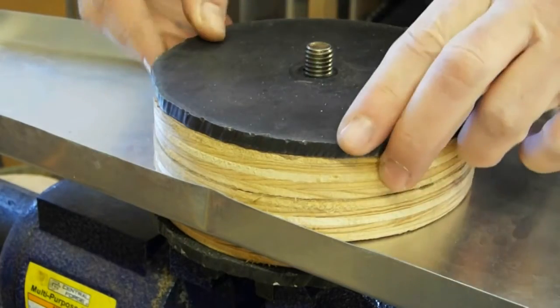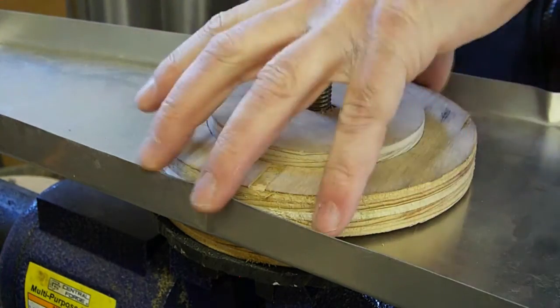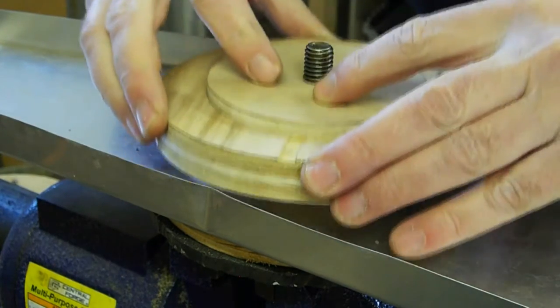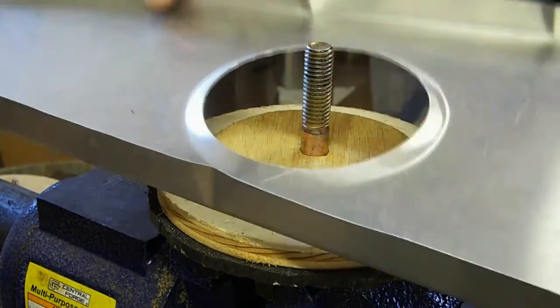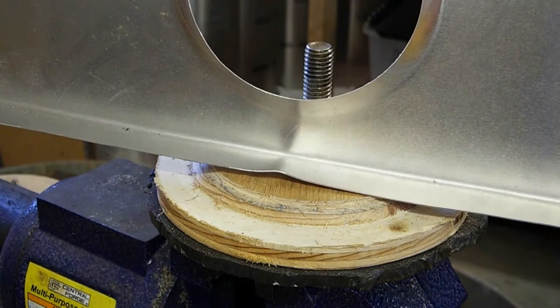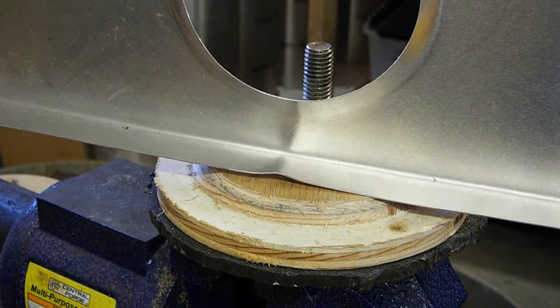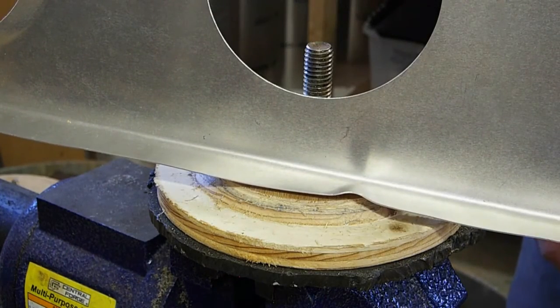And unscrew everything again. Get all the parts out. And assuming it's in focus, that is the pressed part. And then we'll just go through the same process for the second flange.